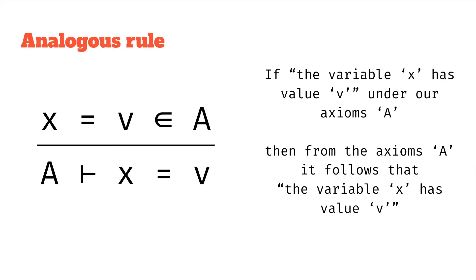So let's say we have this rule for algebra, where we say, if the variable x has value v, under our axioms a, then from the axioms a, it follows that the variable x has value v. Again, maybe this is also a bit silly, but bear with me.